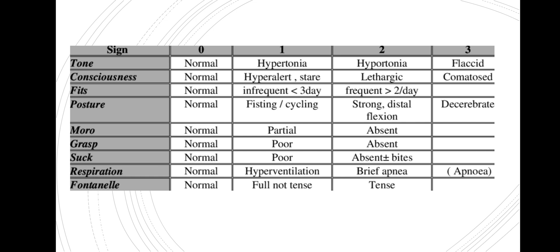For the Moro reflex: if it's normal that's 0, if it's partial that's 1, and if it's absent that's 2. For the grasp reflex: if it's normal that's 0, if there is poor grasp but still some grasping that's 1, and if there is no grasp reflex that's 2. For suck: if it's normal that's 0, if there's a poor suck that's 1, and if it's absent plus or minus biting that's 2.